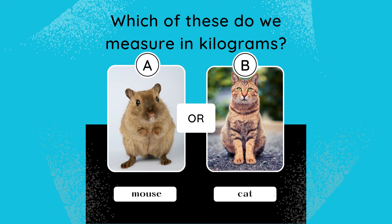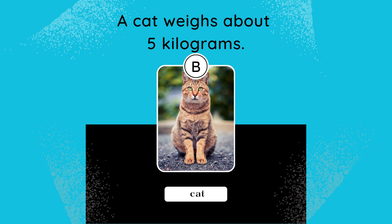Which of these do we measure in kilograms? A. Mouse, or B. Cat? The answer is B. Cat. A cat weighs about 5 kilograms.